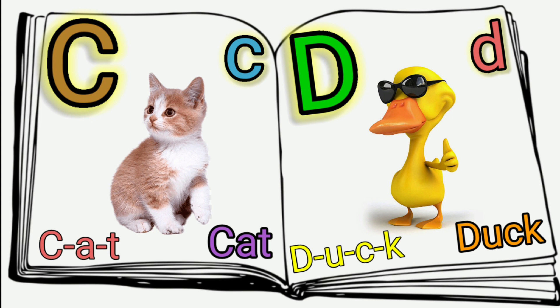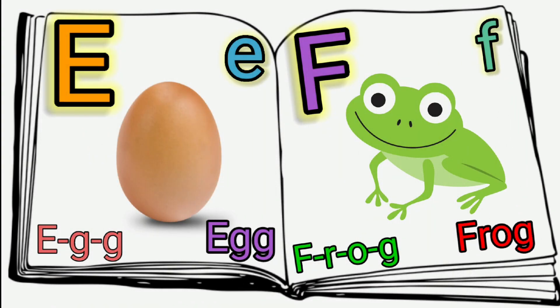D. D is Duck. D, U, C, K. Duck. D is Duck. E is Egg — E, G, G — Egg. E is Egg. F is Frog — F, R, O, G — Frog. F is Frog.